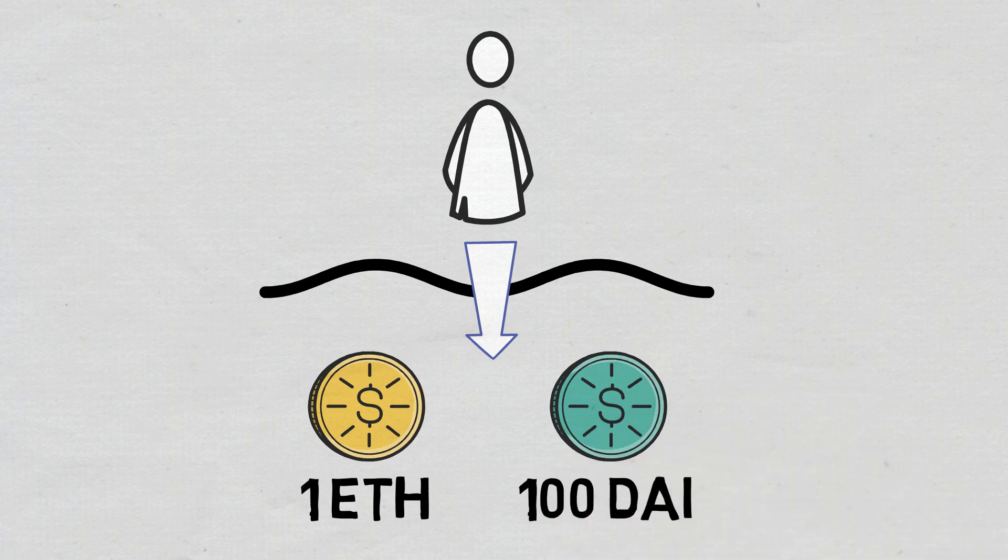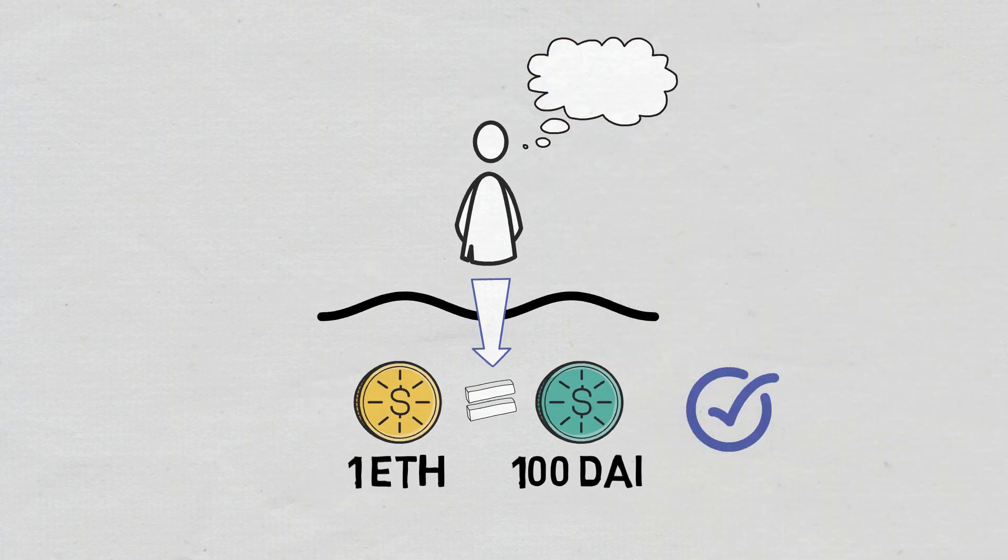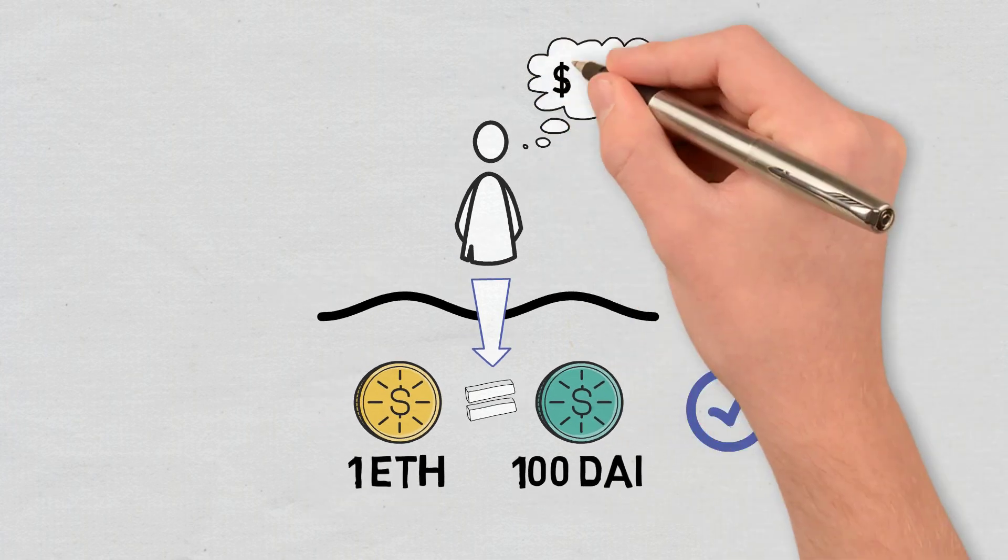The amounts of the deposited tokens must have an equivalent value. In the case described, this means that the price of 1 ETH is 100 DAI at deposit time. Also, let's say that the current dollar value of person X's deposit is $200.